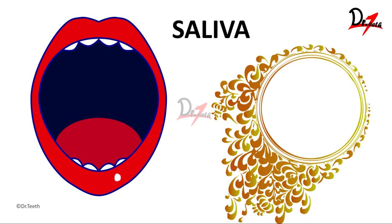The oral cavity is a moist environment and a film of fluid called saliva coats the inner surface of the oral cavity. Saliva has many functions which we will talk about in the later half of the video, but these functions reflect the physiological state of the body, and that is the reason saliva is also termed as the body's mirror.